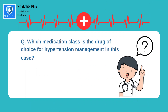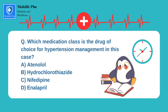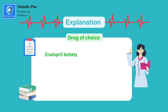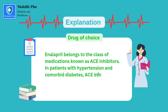Question number 4: which medication class is the drug of choice for hypertension management in this case? A. Atenolol. B. Hydrochlorothiazide. C. Nifedipine. D. Enalapril. The right option is D, that is enalapril. Enalapril belongs to the class of medications known as ACE inhibitors. In patients with hypertension and comorbid diabetes, ACE inhibitors are considered the preferred choice.